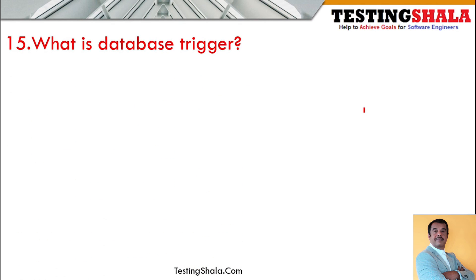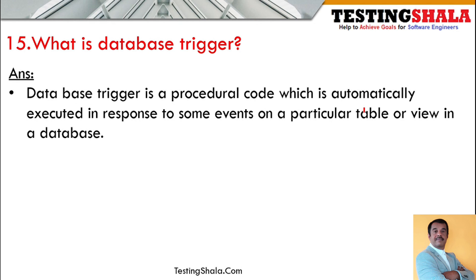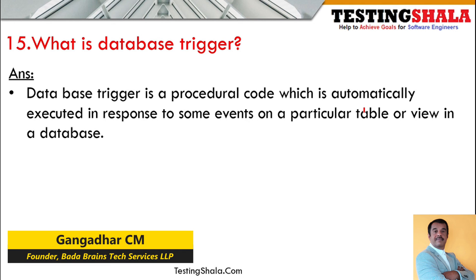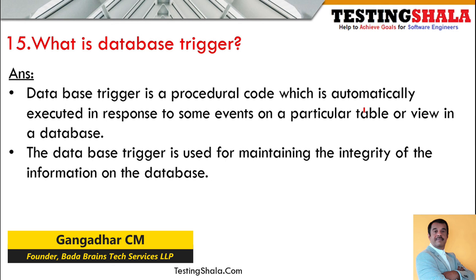The next question is: what are database triggers? Database triggers are procedural code — a program or code that is automatically executed in response to certain events on a particular table or view. Database triggers are used to maintain the integrity of information in the database.